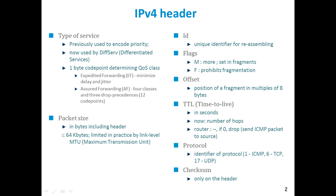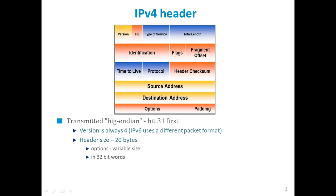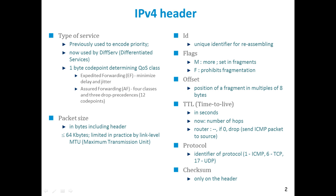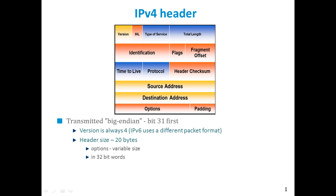Looking at the IPv4 header fields: the first field is version, which will be 4 for IPv4 headers. The next field is header length, which will be marked as 20 for a standard header. If options are included with the header, the size will be more than 20, and that larger value is mentioned in this field.